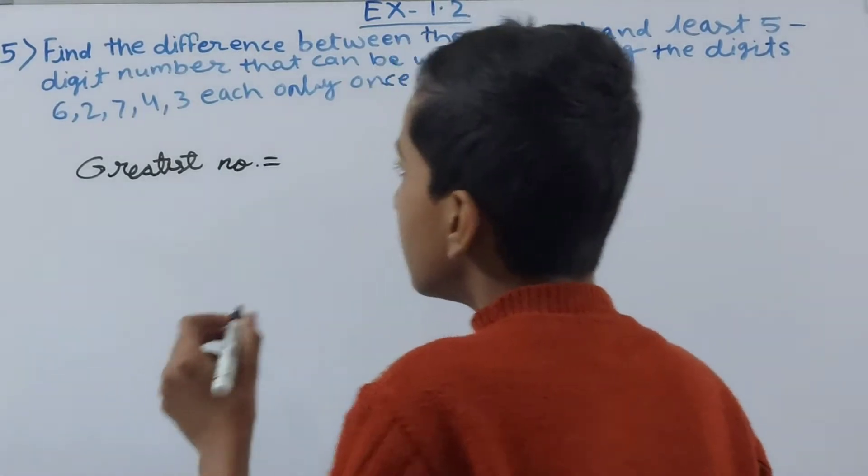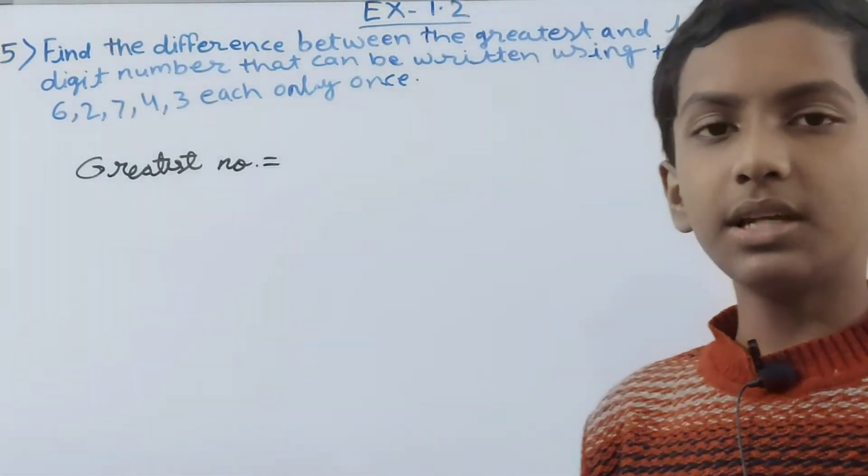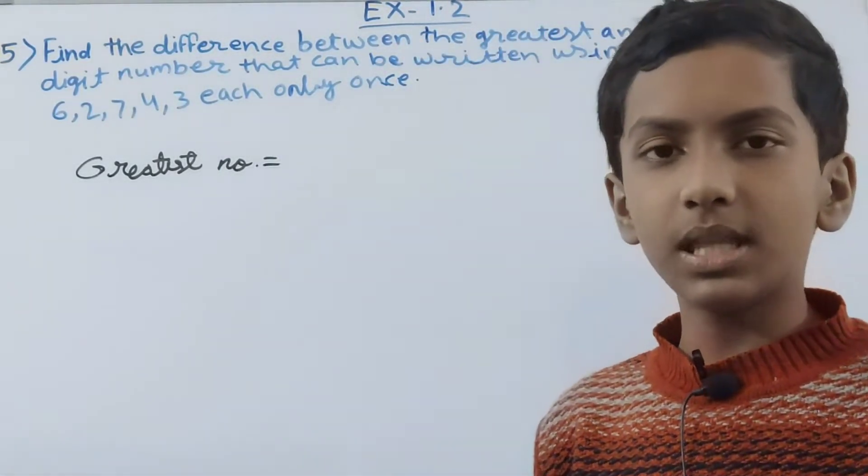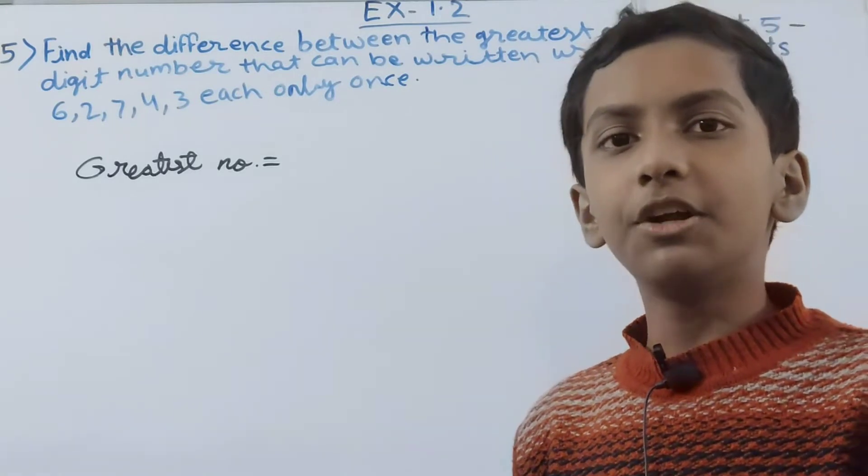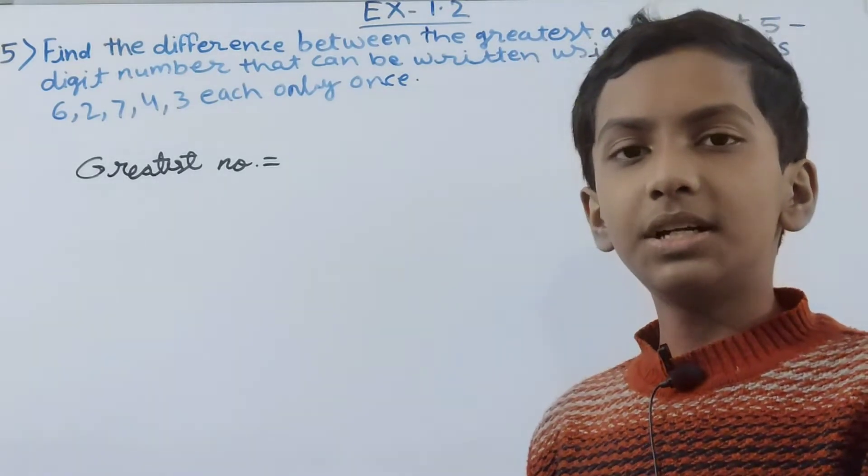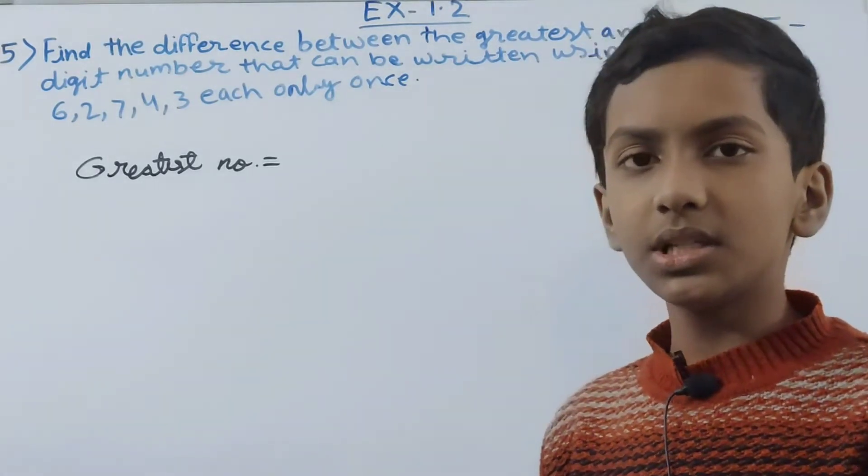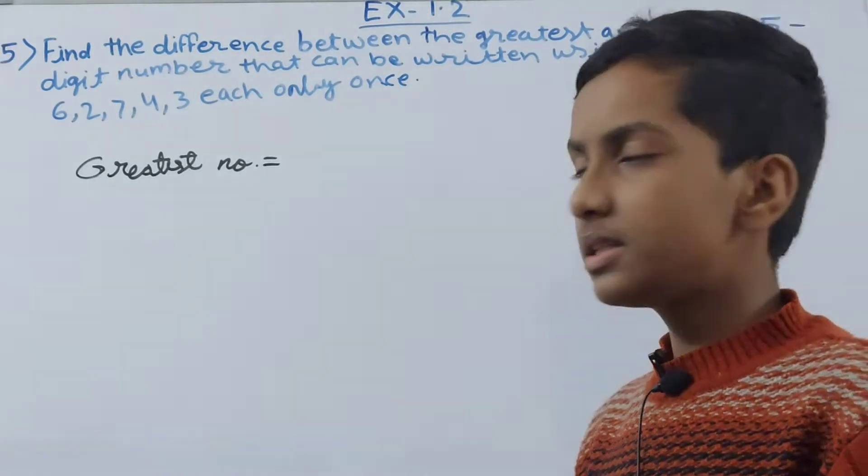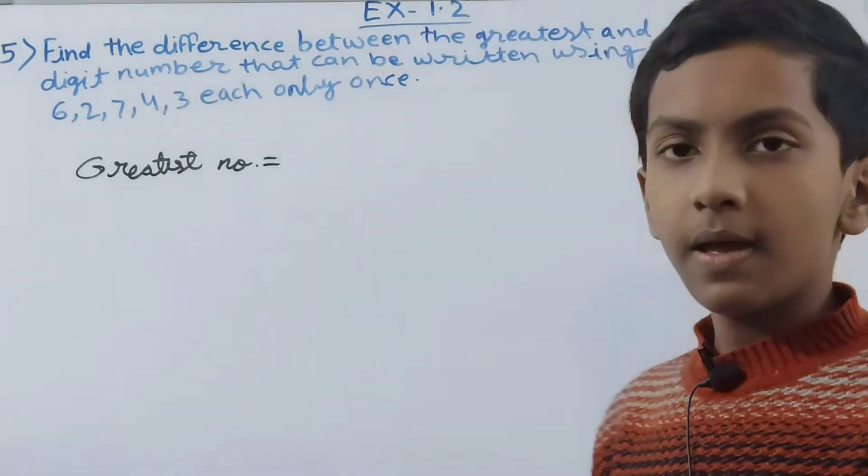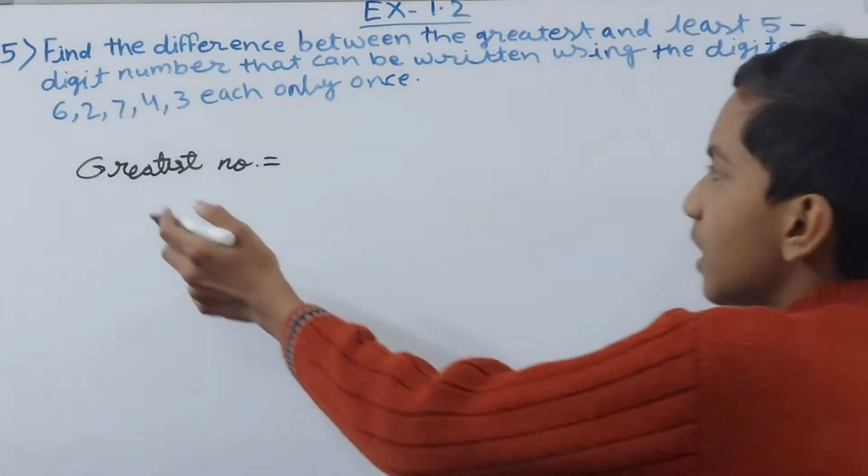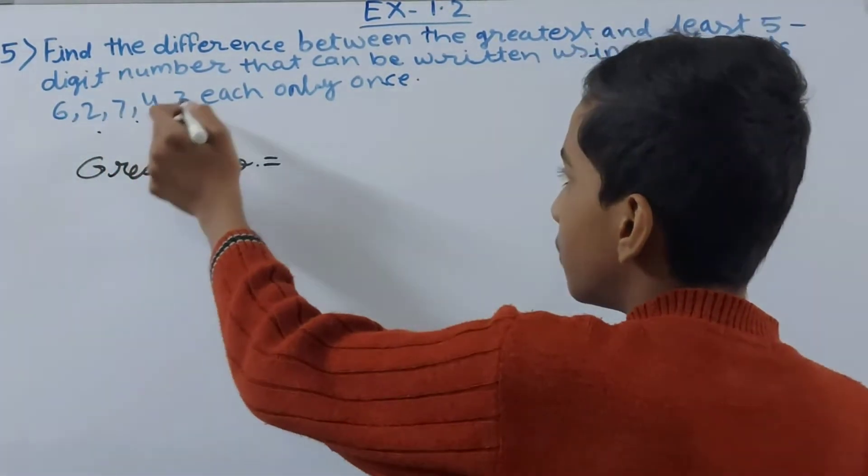Greatest number. Now whenever you are given digits and you have to make the greatest number with them, we first write the greatest digit, then the digit which is smaller than the greatest digit, and we continue this till the smallest digit. So the greatest digit out of 6, 2, 7, 4, and 3 is 7.